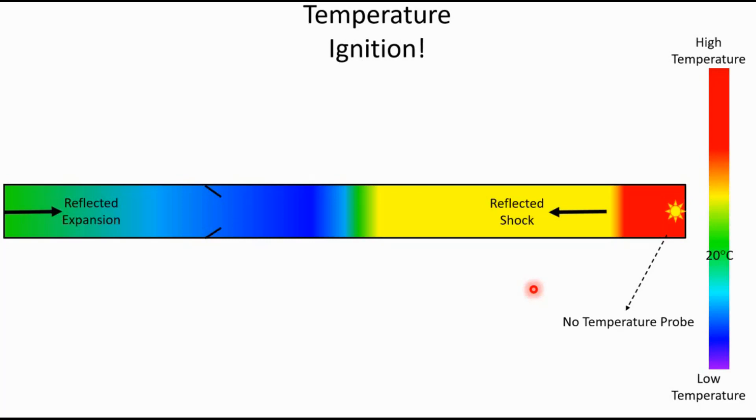That's nowhere near enough time for a thermocouple or a thermistor or any other physical temperature probe to raise up to that final temperature. And the final temperature, as I mentioned, can be as high or sometimes higher than 2500 Kelvin. That would melt most thermocouple probes if they had a chance to come up to equilibrium. So there's a couple reasons why you can't have a physical temperature probe.